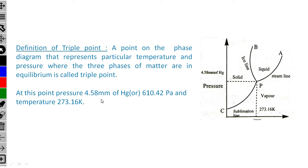At the triple point, the pressure value on the y-axis is 4.58 mm of Hg, or equivalently 610.42 Pascal. The temperature value is 273.16 K in absolute temperature.